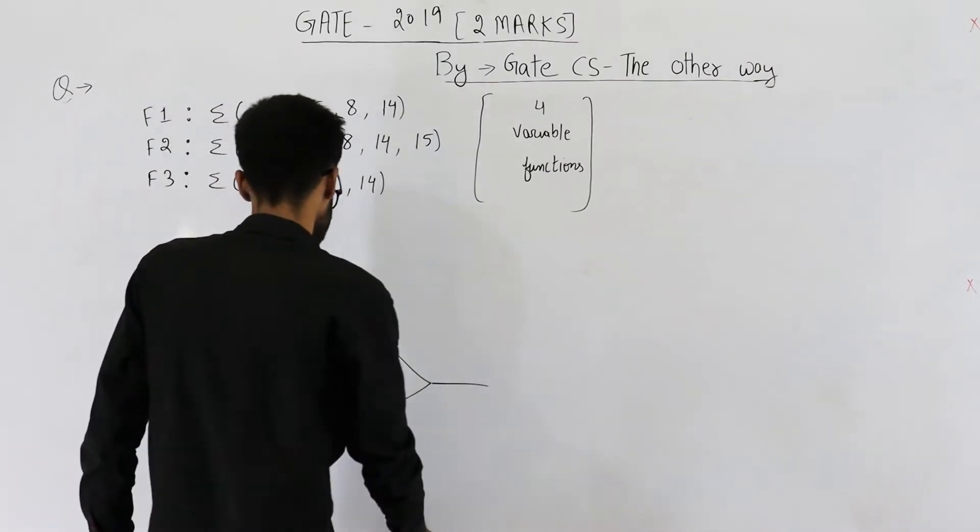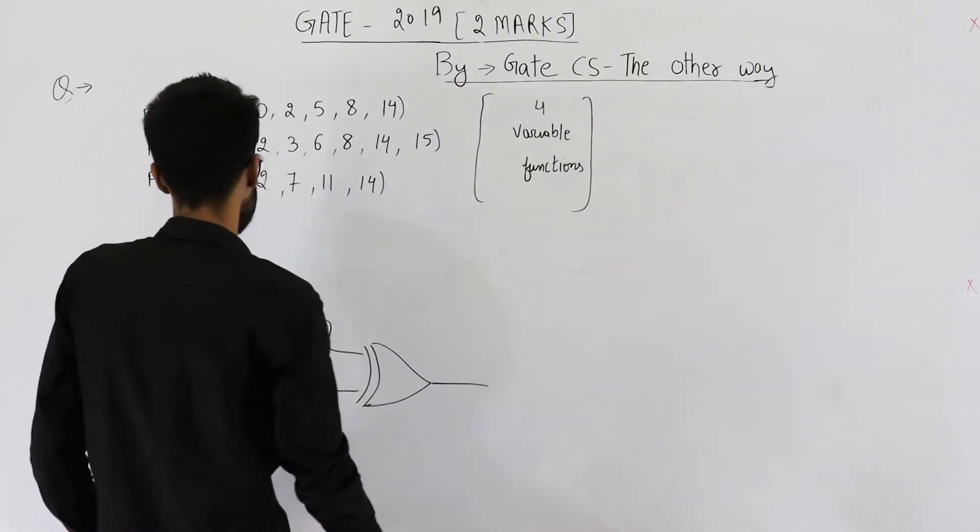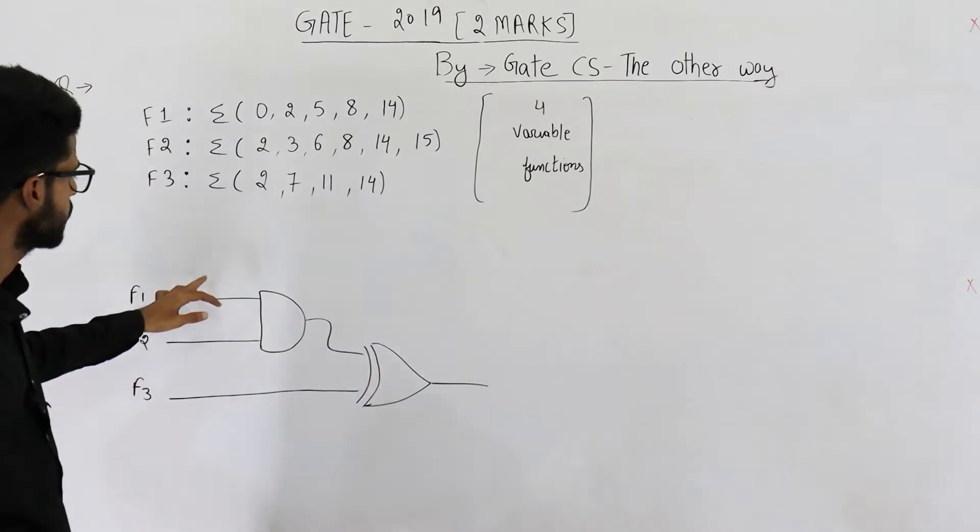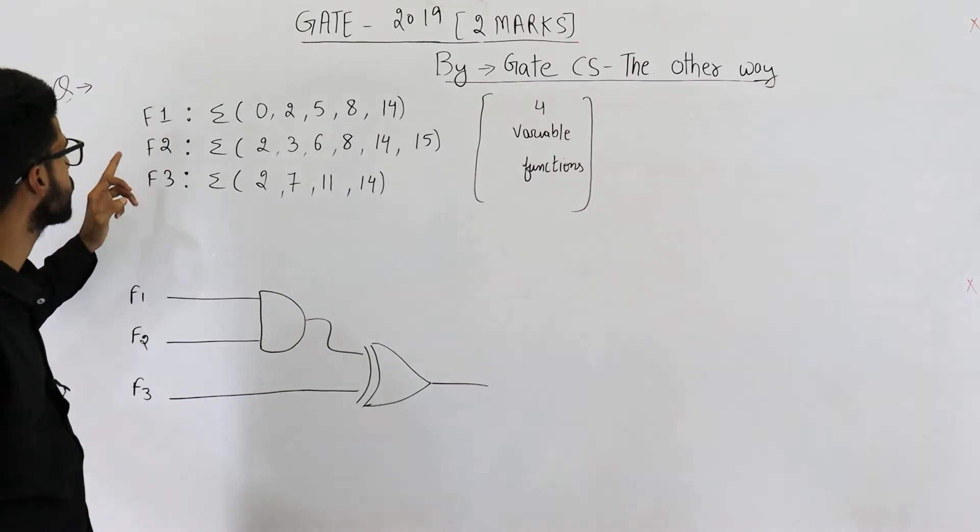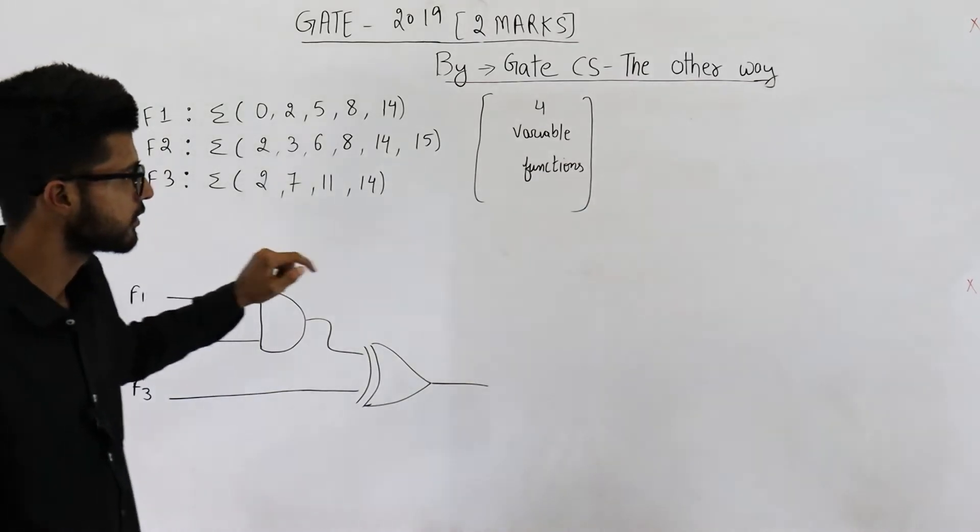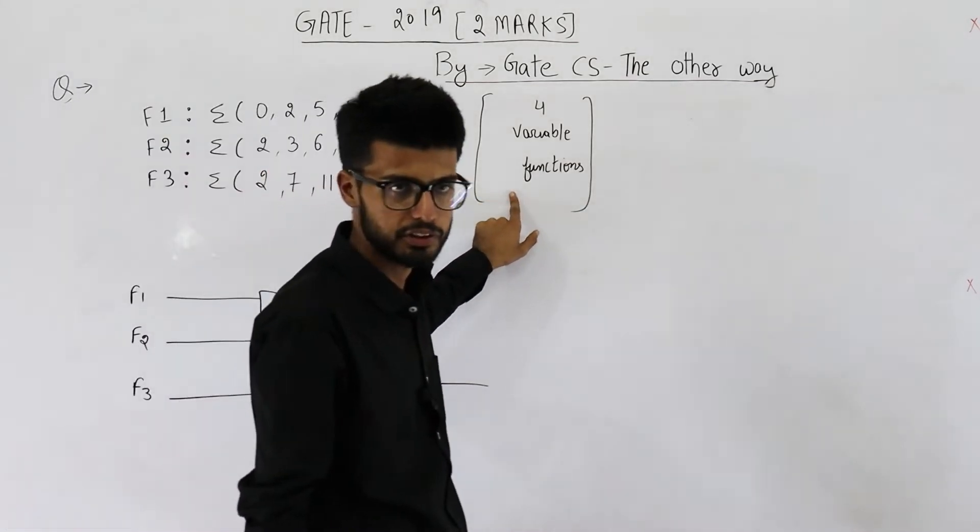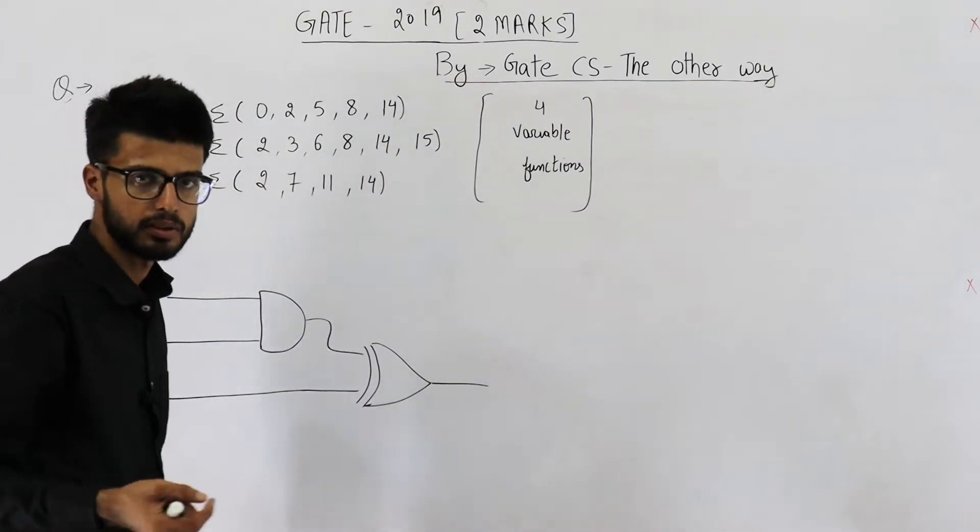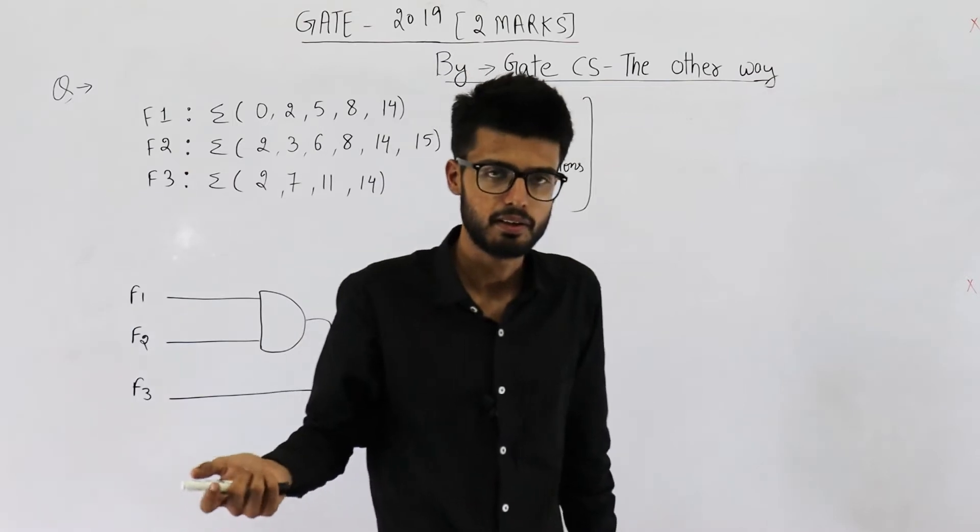I have drawn this circuit here. You can see there is an AND gate and a XOR gate. The three inputs are f1, f2 and f3. These functions are four variable functions. That means they are dependent on four variables, might be a, b, c and d.